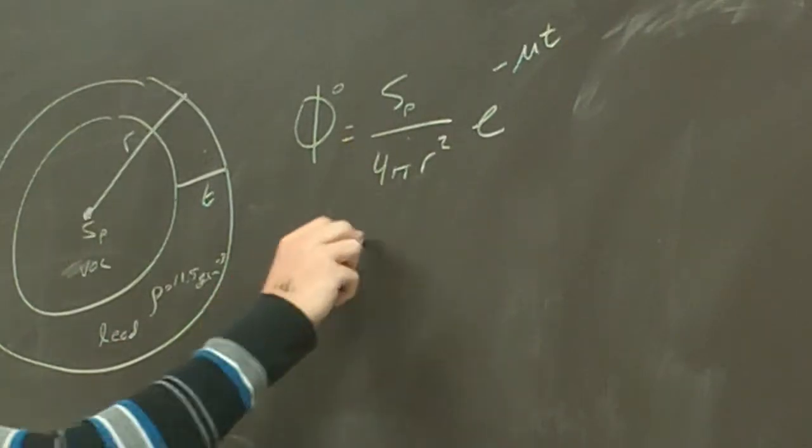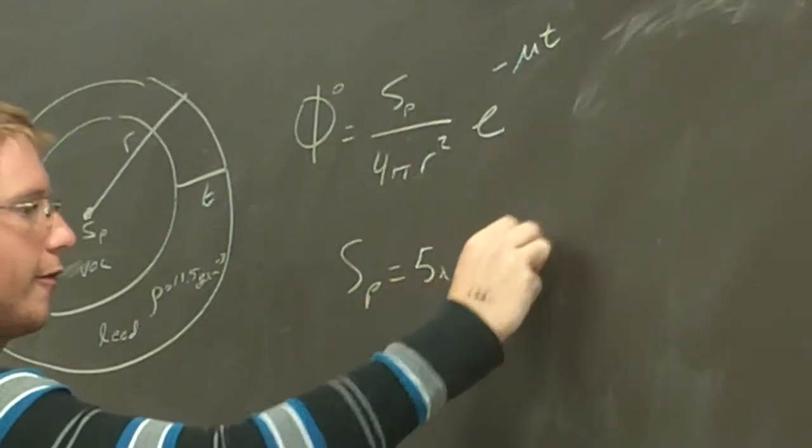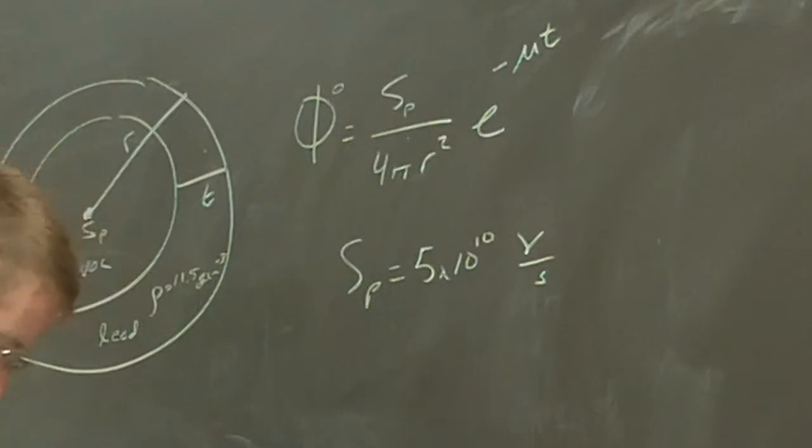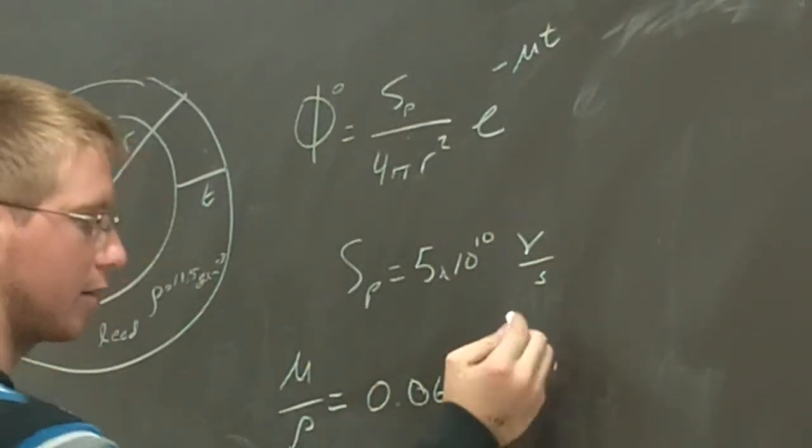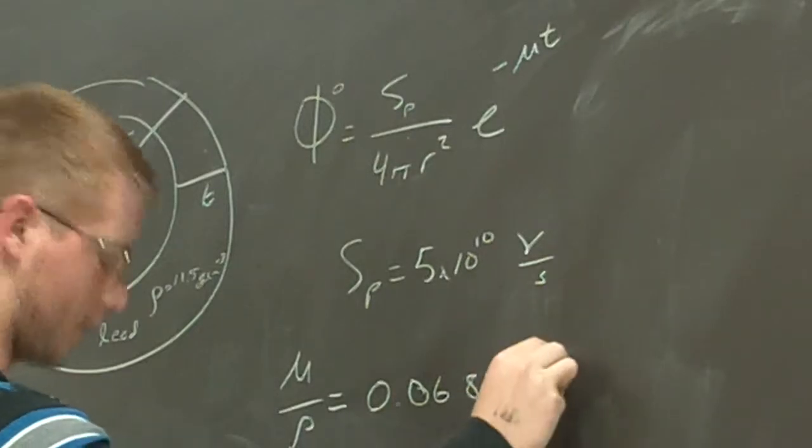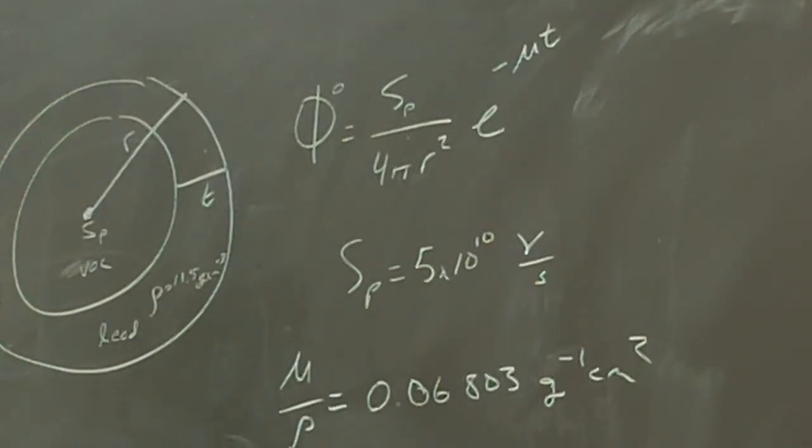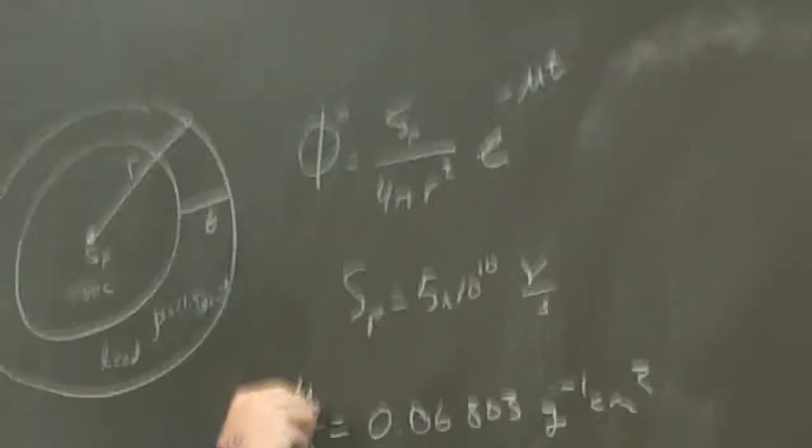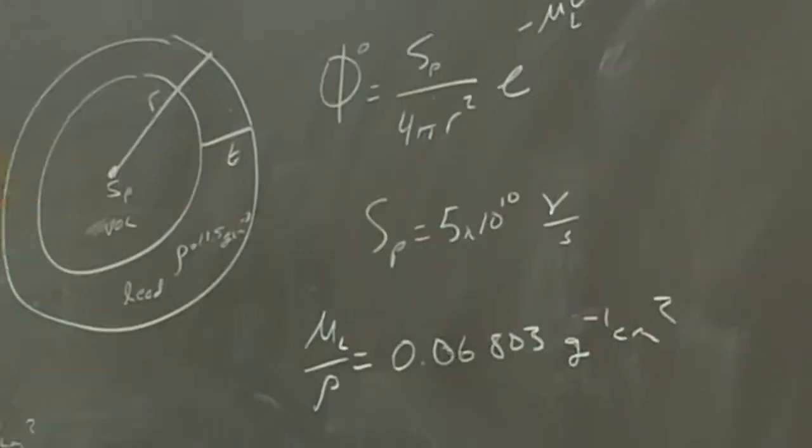So our source strength is, if you solve it out, it's 5 times 10 to the 10 photons per second. And so our shield utility gives us mu over rho. It does not give you mu. And this is 0.06803 per gram centimeter squared for lead. Probably should use Pb, but I think it's lead. Yeah.